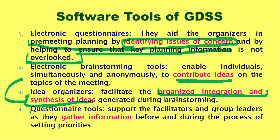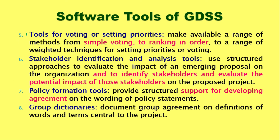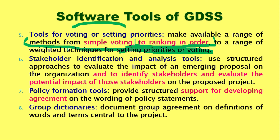The fourth tool is questionnaire tools. Facilitators, attendees, and group leaders who are part of the meeting can provide input and gather information before and during the process of setting priorities — deciding which idea can be given more preference. The fifth area covers voting and priority-setting tools. There is a range of methods used at this point, which can be simple voting or ranking in order, so that priorities can be set.